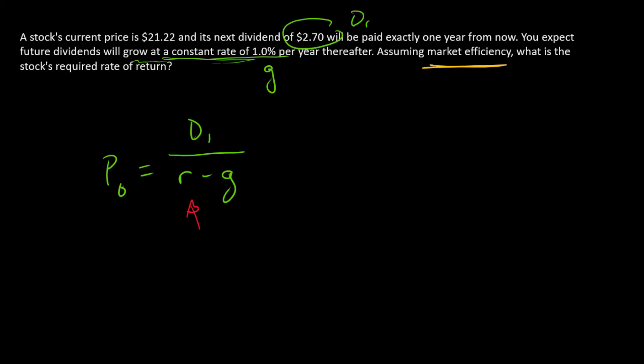Let's solve this for R. If you solve algebraically for R, you have D1 over P plus G. Now we've got all of these numbers that we can insert.